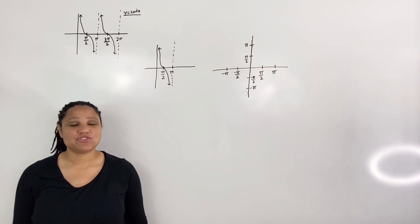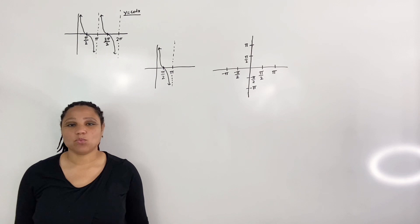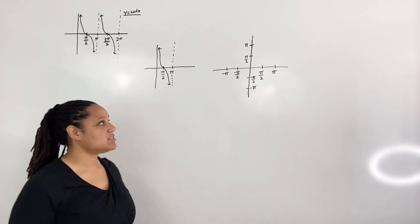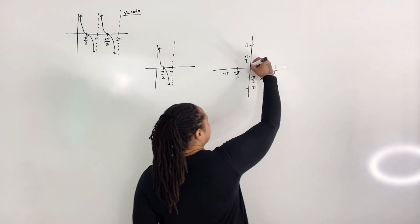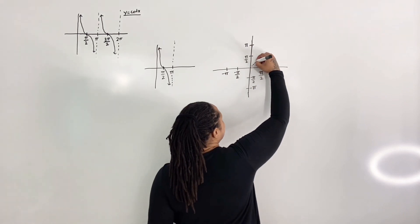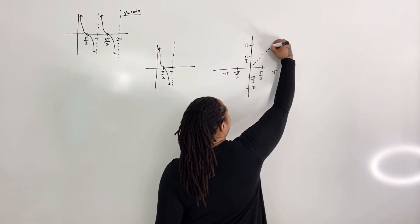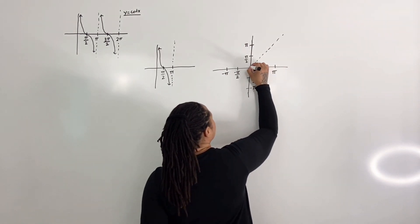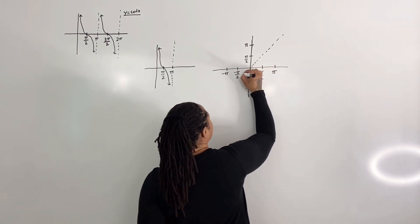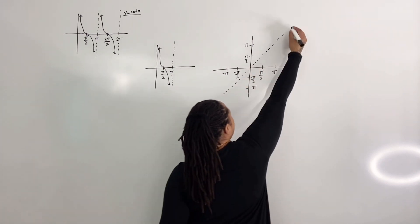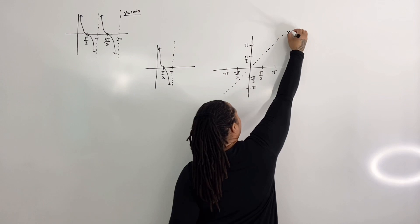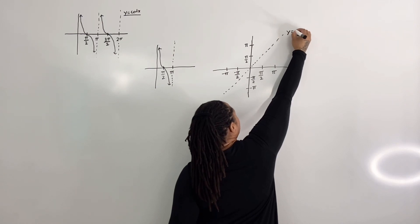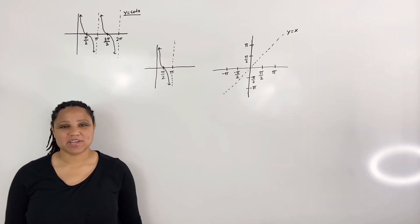Step 2: draw the line y equals x. If I draw the line y equals x, it's just going to look like this.